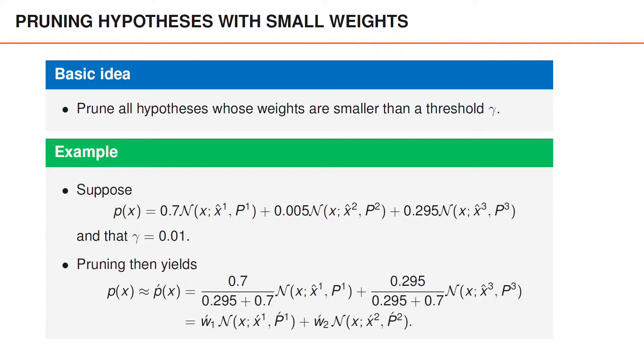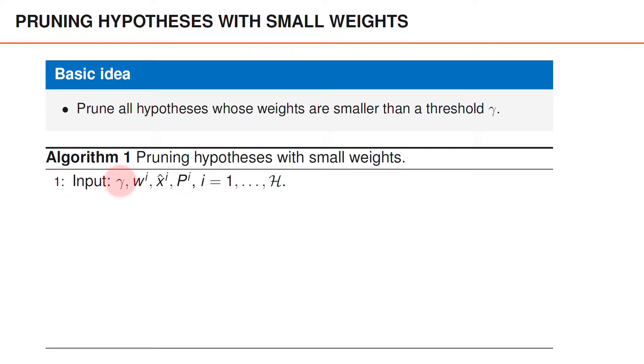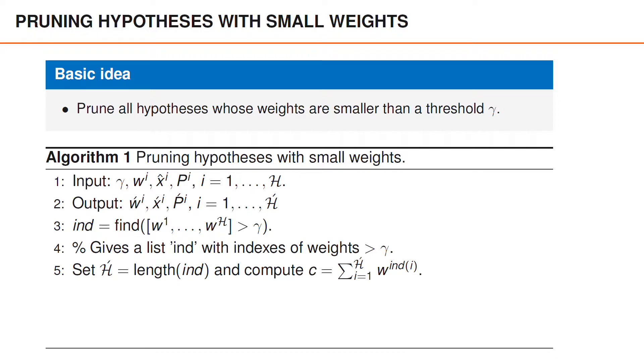Let us look at what an algorithm that does this might look like. We start with a threshold gamma and a Gaussian mixture with capital H components. The output from the algorithm should be a new Gaussian mixture, normally with fewer components. The first thing that we can do is to find the indices of all the weights that are larger than gamma and store these indices in a list ind. These are the indices of the hypotheses that we intend to keep. We can then compute the normalization factor for the weights by summing up the weights of all the hypotheses that we intend to keep. Finally, we can go through the hypotheses in the list ind and store the parameters for those hypotheses in the new variables w acute, x acute and p acute.